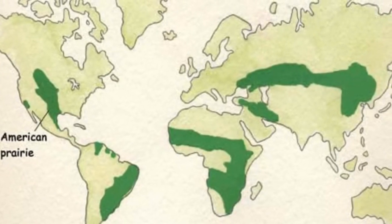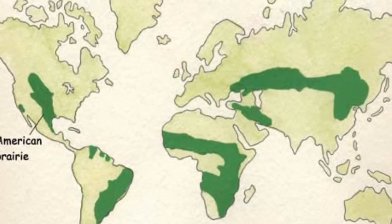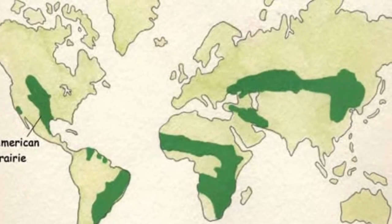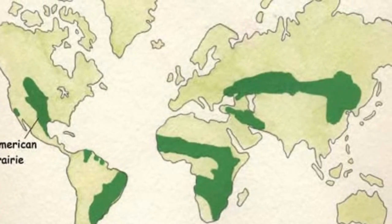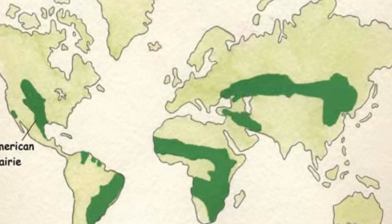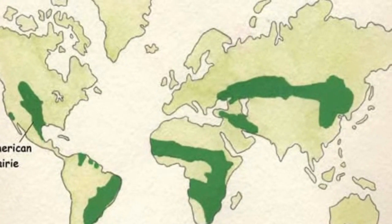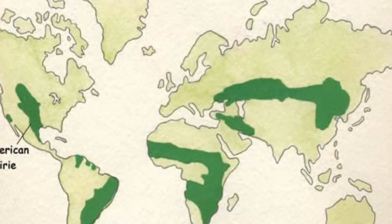This is a map of grasslands, and you can see that there are grasslands on every continent except Australia and Antarctica.